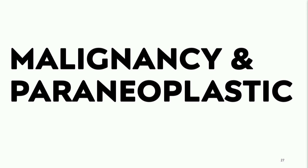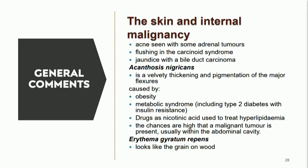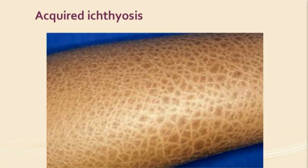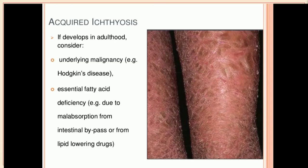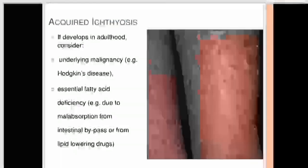There are many malignancies and paraneoplastic syndromes with cutaneous manifestations. Acanthosis nigricans was already mentioned; additionally, acne resistant to therapy may raise suspicion for adrenal tumors, flushing for carcinoid syndrome, and jaundice for bile duct carcinoma. Erythema gyratum repens shows a grain-of-wood skin appearance associated with malignancy. Acquired ichthyosis appearing suddenly in adulthood may indicate Hodgkin's disease, though it can also occur with essential fatty acid deficiency or drug-induced from HMG-CoA reductase inhibitors.